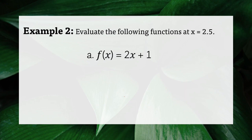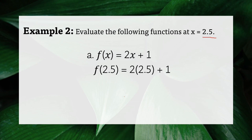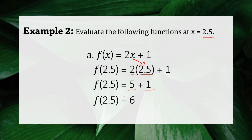For letter A, f of x equals 2x plus 1, with x equals 2.5. Substitute 2.5 into the x variable. So f of 2.5 equals 2 times 2.5 plus 1. Simplifying: 2 times 2.5 is 5, then plus 1 gives 5 plus 1 equals 6. Therefore, f of 2.5 equals 6.